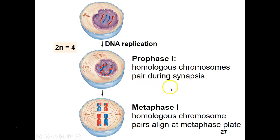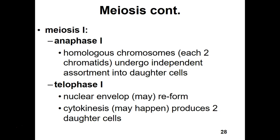At the metaphase plate in metaphase 1, homologues line up next to each other — unlike in mitosis where individual chromosomes line up. The orientation is random, which is known as independent assortment. Just because one chromosome is on one side doesn't mean its homologue has to be on a particular side. In anaphase 1, the homologues are pulled apart, while sister chromatids remain together, so we end up with haploid cells that still have duplicated information.